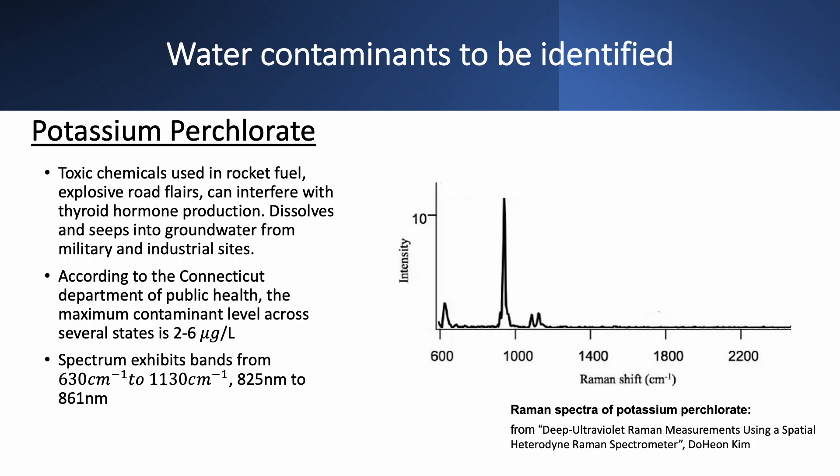According to the Connecticut Department of Public Health, the maximum contaminant level for several states is 2 to 6 micrograms per liter. The Raman spectrum exhibits bands from 630 inverse centimeters to 1130 inverse centimeters, which corresponds to Raman peaks of 825 nanometers and 861 nanometers respectively.